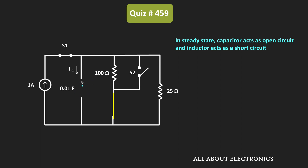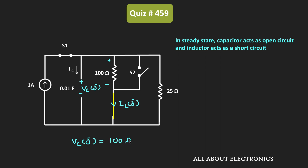In this condition, the voltage across the capacitor is Vc(0⁻) while the current through the inductor is IL(0⁻). As you can see, the voltage across the capacitor is the same as the voltage drop across the 100 ohm resistor, and the current through the 100 ohm resistor equals IL(0⁻). So Vc(0⁻) equals 100 ohms times IL(0⁻). We need to find this inductor current IL(0⁻).